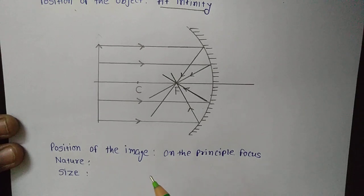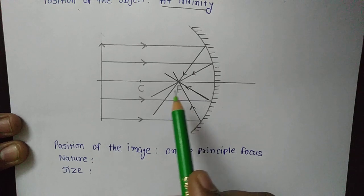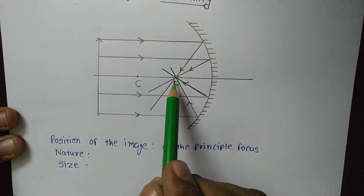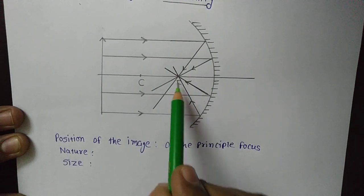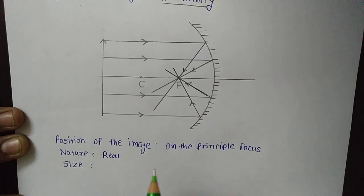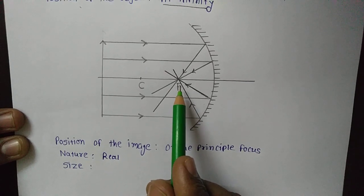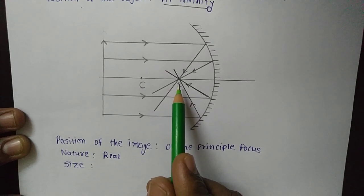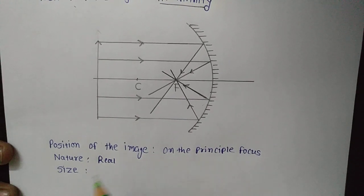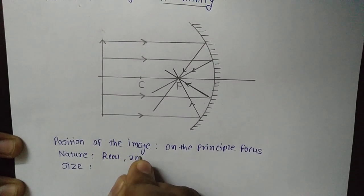What would be the nature? We know that if after reflection the rays actually meet each other, the image formed will be real. Here you can see all the rays meet each other at point F in reality, so we can say the nature will be real. Mostly, a real image is always inverted. Since it is a point-size image we need not verify inversion directly, but real images are always inverted. So we can say the image is real and inverted.